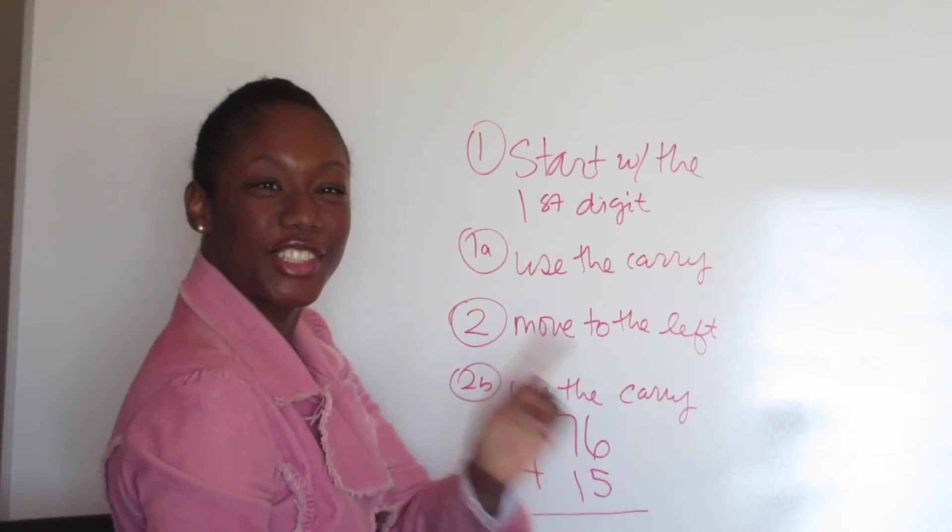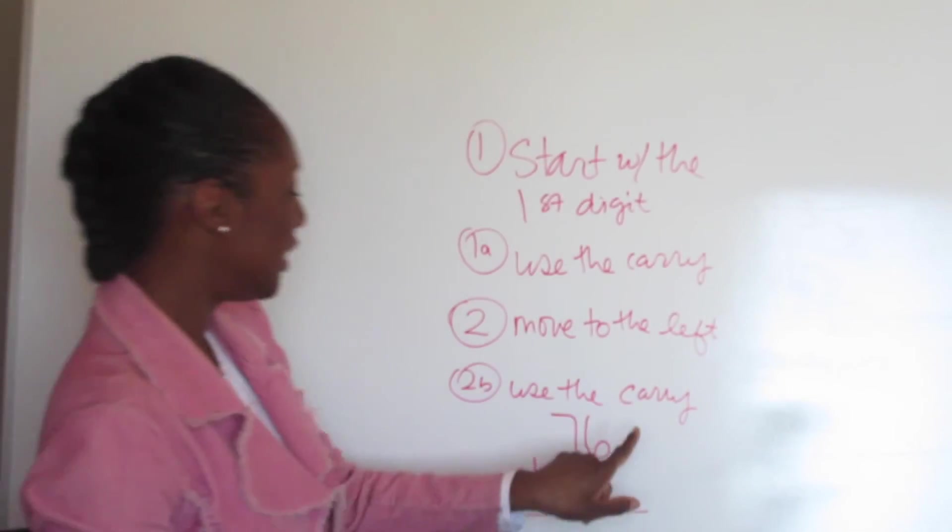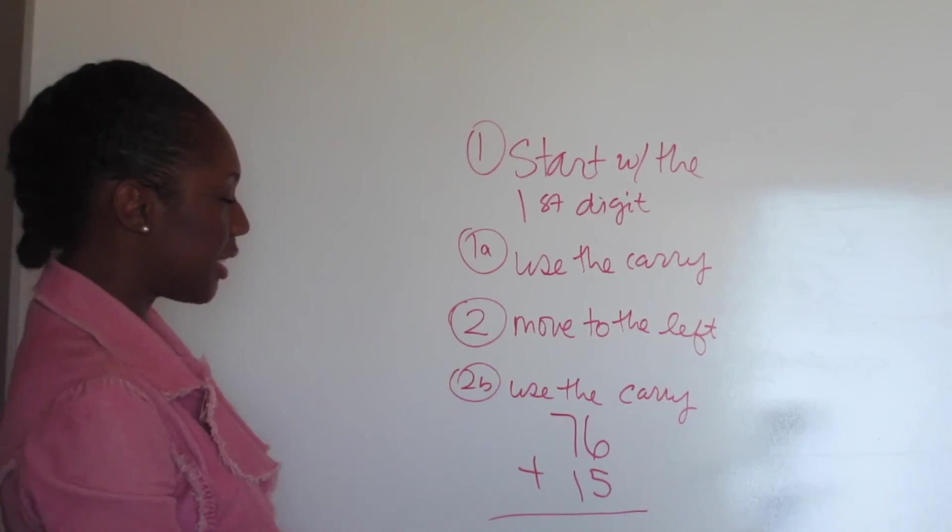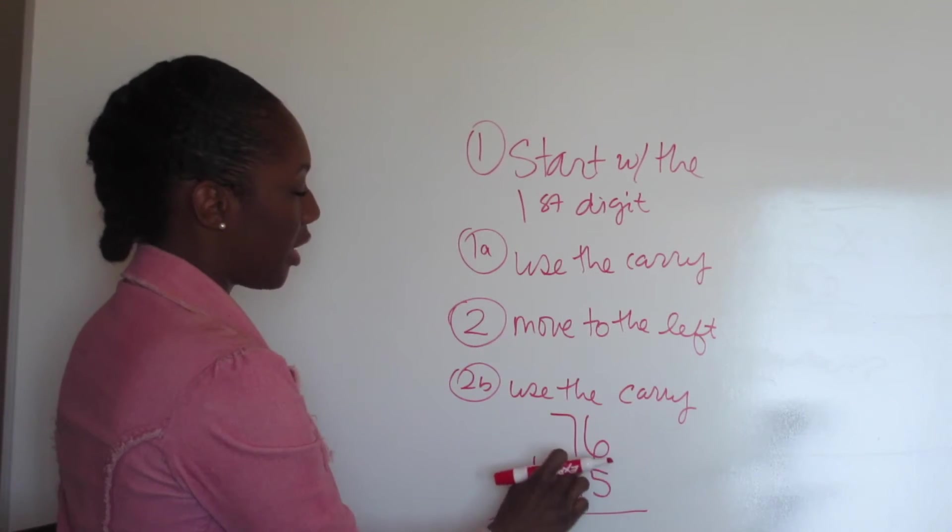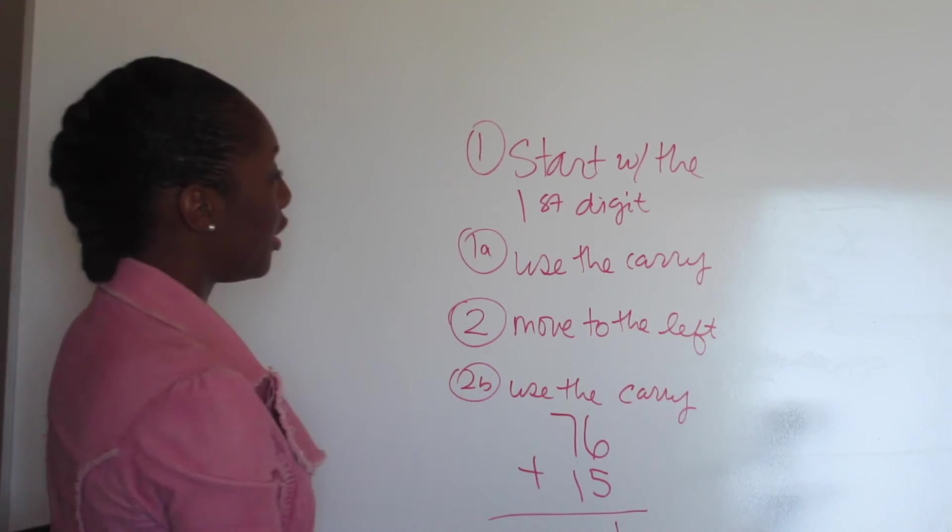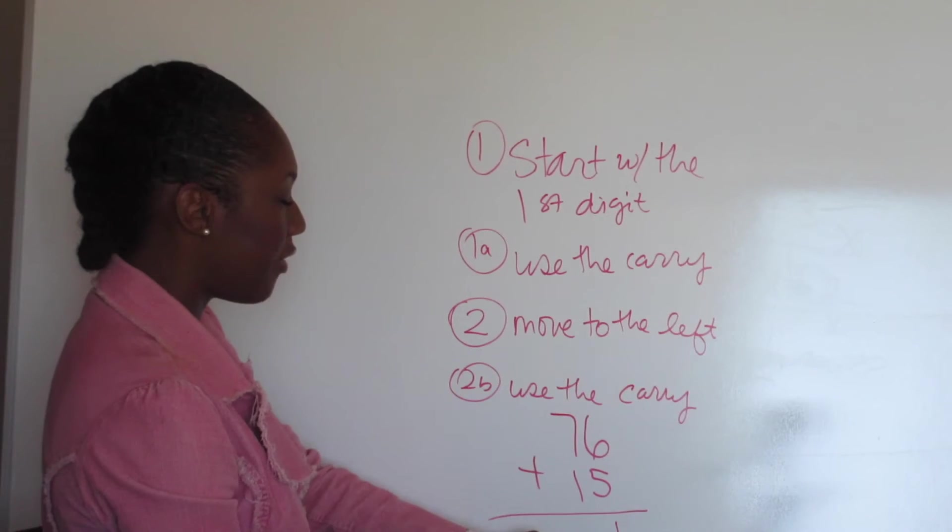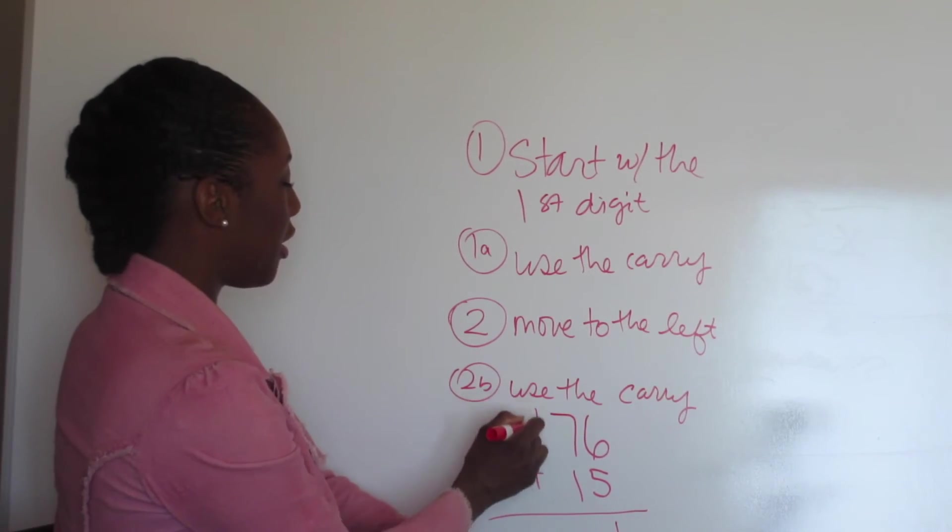Rule number 1: start with the first digit. 6 plus 5. We see the dots, we know that's 11. 6, 7, 8, 9, 10, 11. Use the carry. We can't put 11 here, so we put the first digit there. Carry the 1.